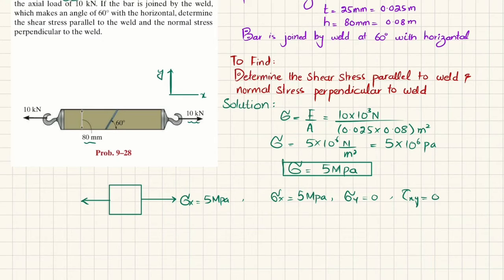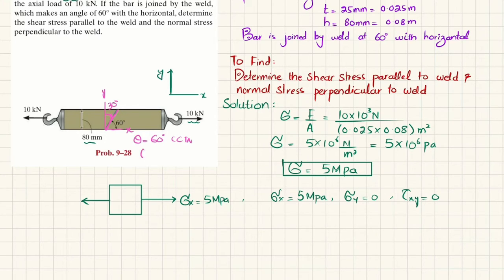The weld makes 60 degrees with the horizontal. You can either take θ = 60° counterclockwise (positive), or you can see that if this is your x-axis and this is your y-axis, the remaining angle is 30 degrees in the clockwise direction. So θ = −30°, meaning 30 degrees clockwise.